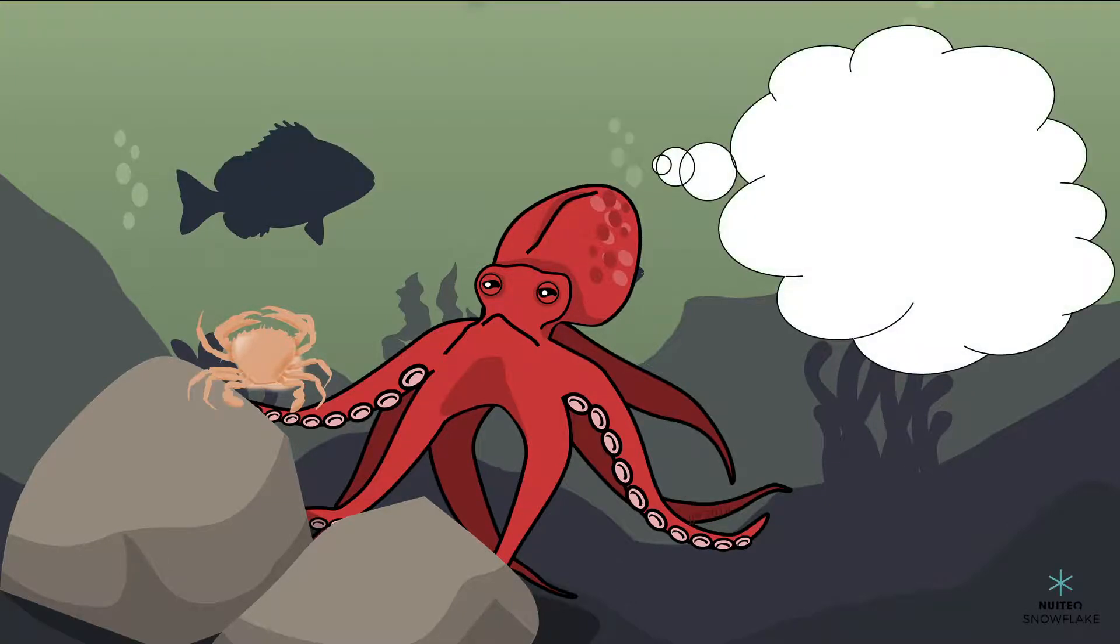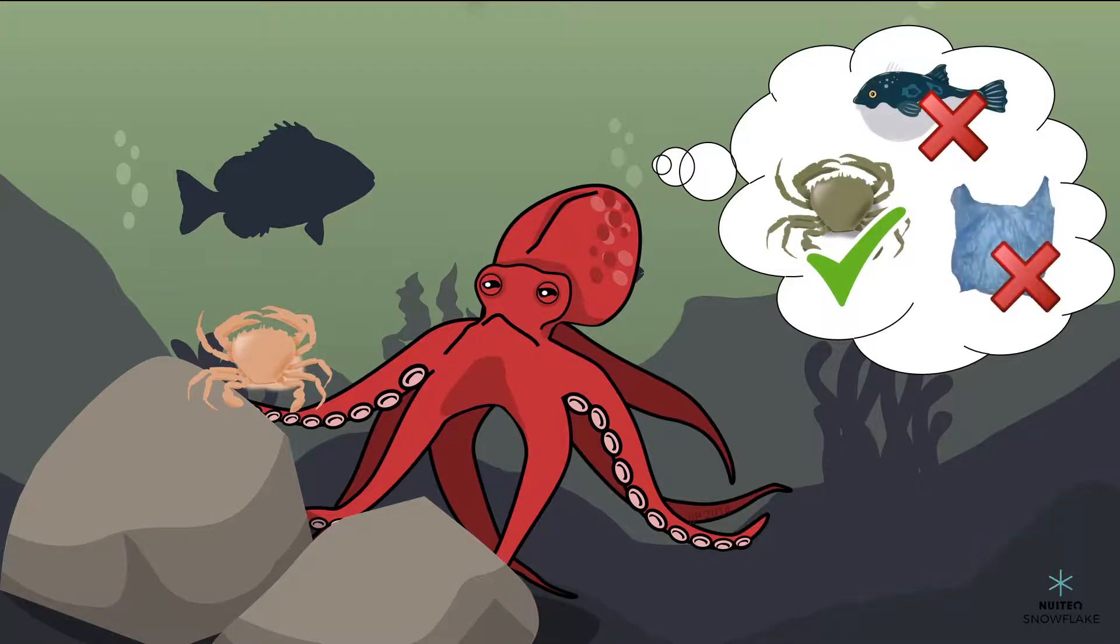So the brain remembers what's okay to eat and what's not okay to eat. If the octopus has eaten something similar before and it was okay to eat, then it will eat this thing it's touching now as well. If it has eaten something similar before and it wasn't okay to eat, then it won't eat this thing now either.